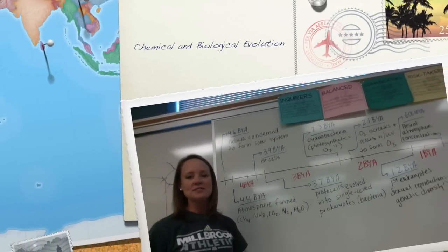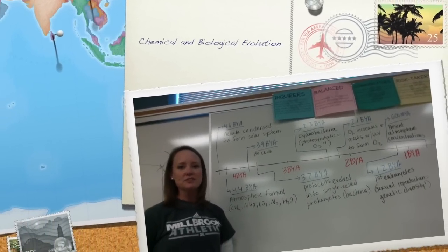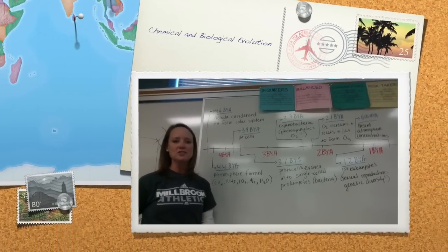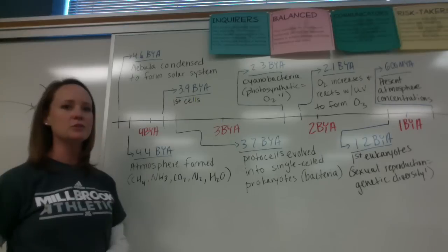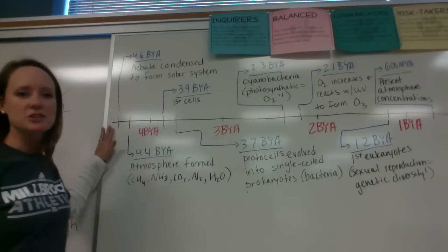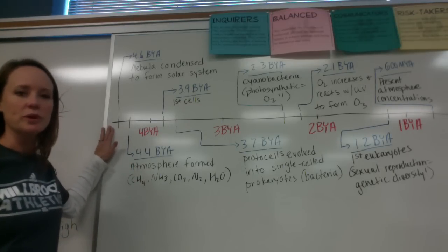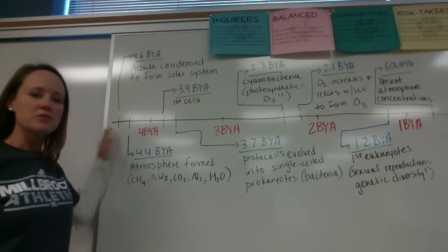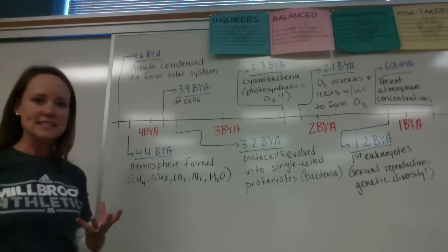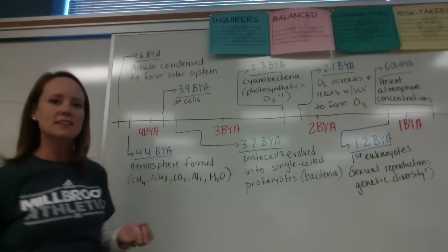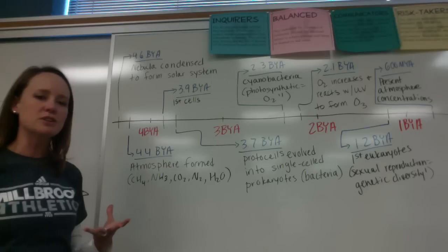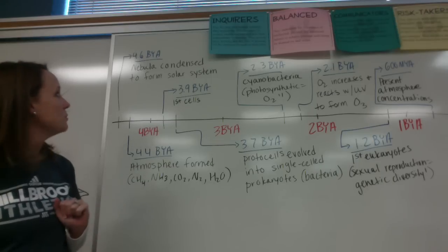We're going to look at a timeline of some of the major events in Earth's history and look at a little bit of the biological and chemical evolution. Starting 4.6 billion years ago when our solar system was formed, we've talked a little bit about the nebular theory where there was a cloud of dust and gas that condensed. The gases at the center form the sun, and the leftover dust and gas form the planets.